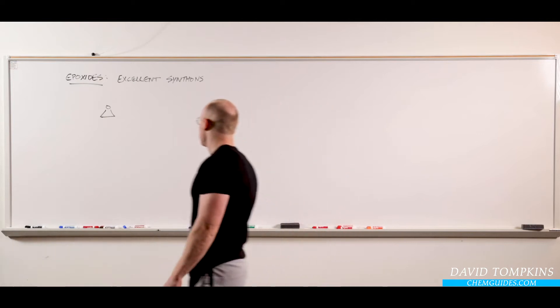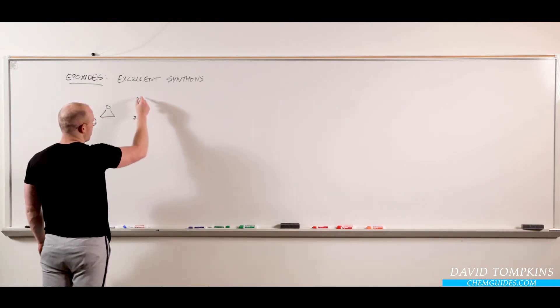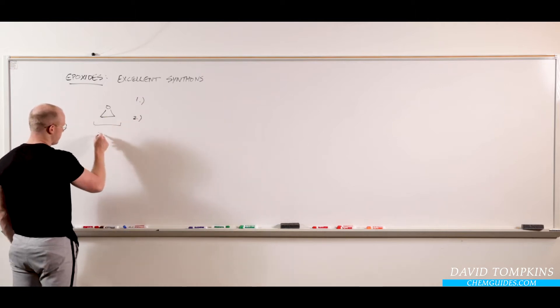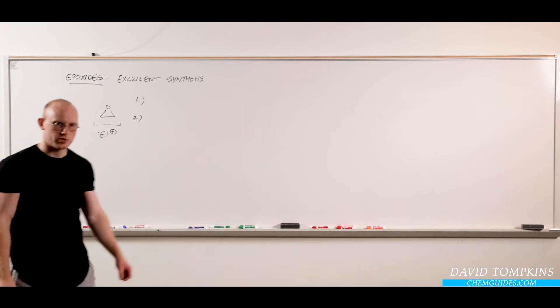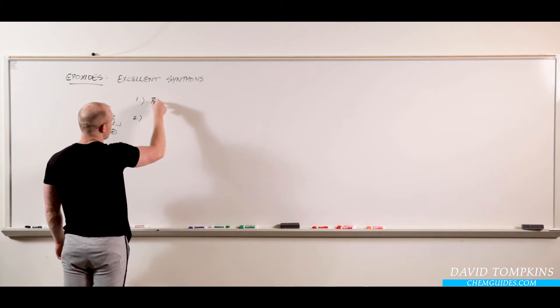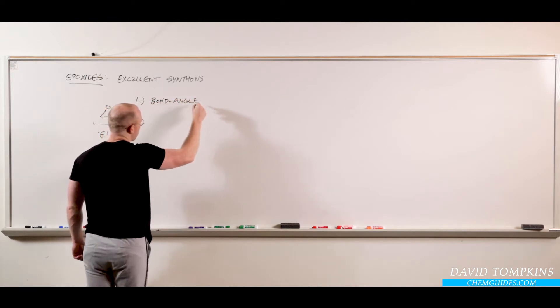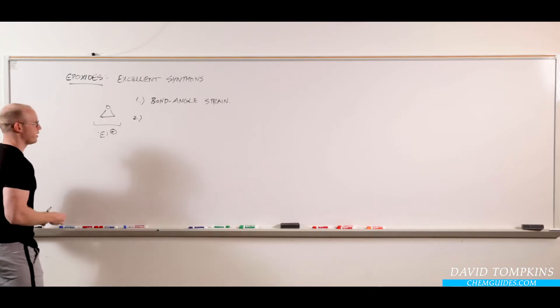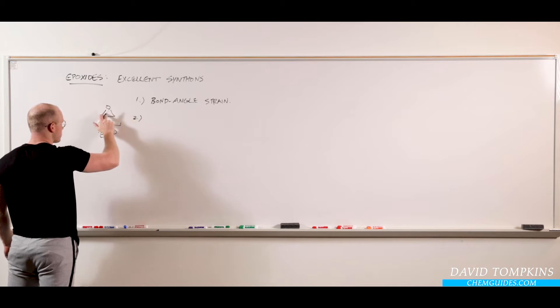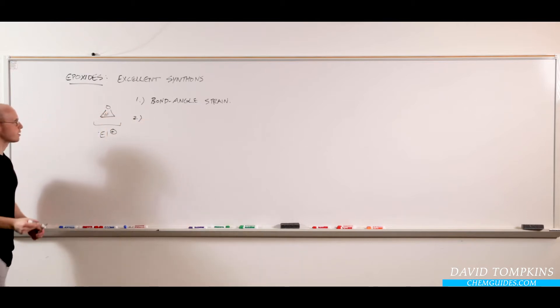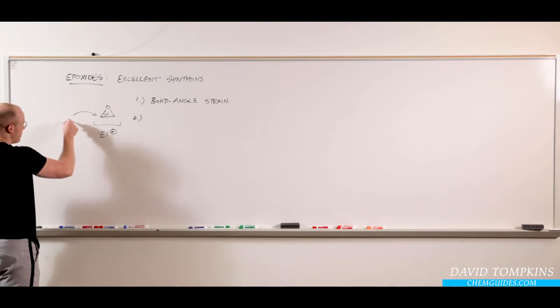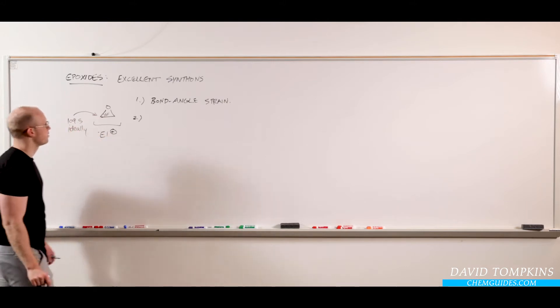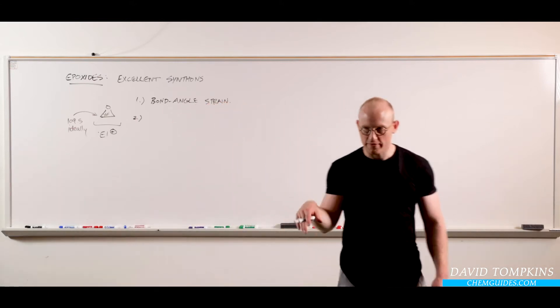What that means is we're going to use them as electrophiles for two reasons. Electrophilic epoxides react with a variety of nucleophiles, first of all, because of bond angle strain. Think of this as being a triangle. Each bond angle here is 60 degrees, and ideally it should not be 60 degrees for an sp3 carbon that is stable. It should be 109.5 in an ideal geometry. So there's a driving force, a thermodynamic driving force, to break open that three-membered ring.